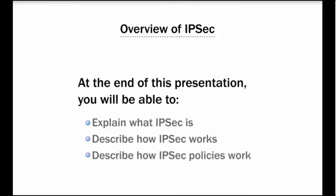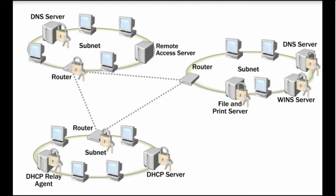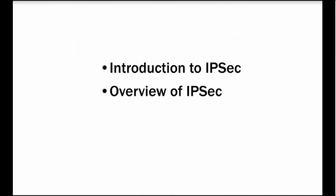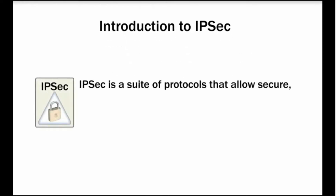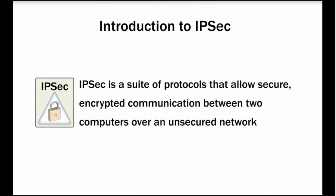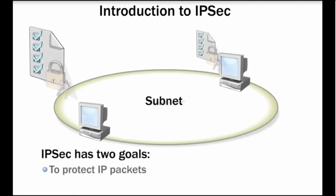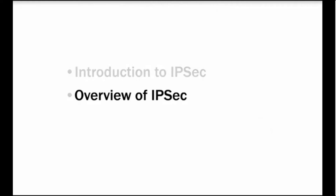You can secure network traffic by using IPSec so that unauthorized users or applications cannot access private data as it's being transmitted or received within TCP/IP networks. IPSec is a suite of protocols that allow secure encrypted communications between two computers over an unsecured network. IPSec has two goals: to protect IP packets and to provide a defense against network attacks.